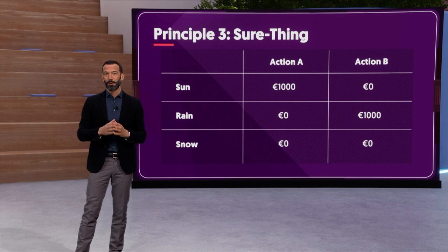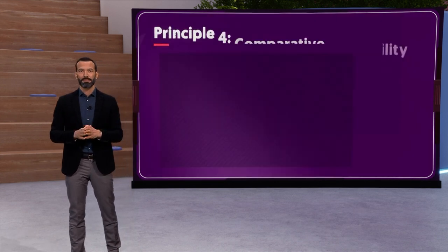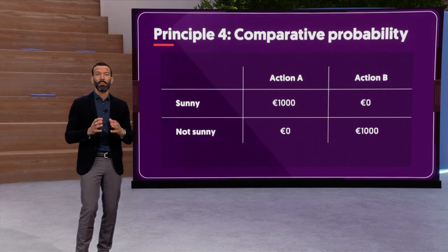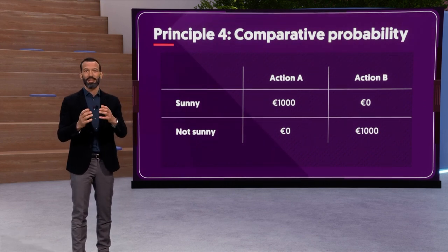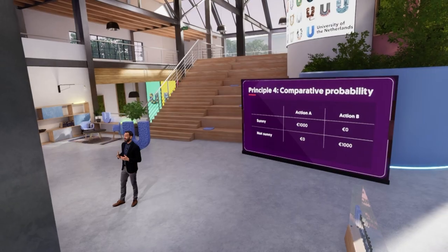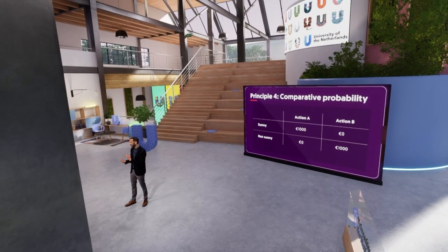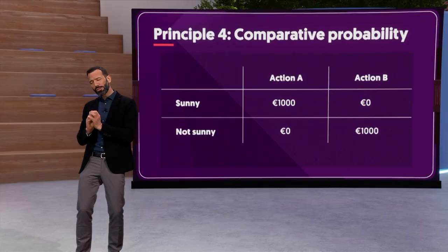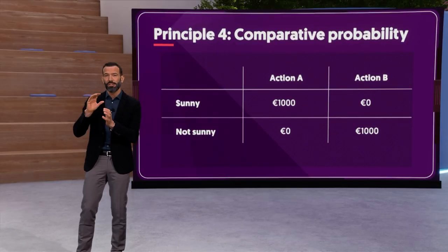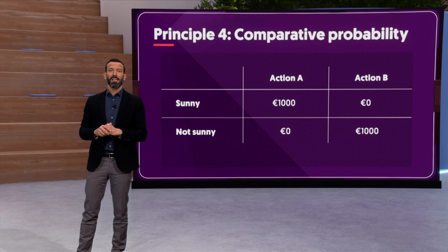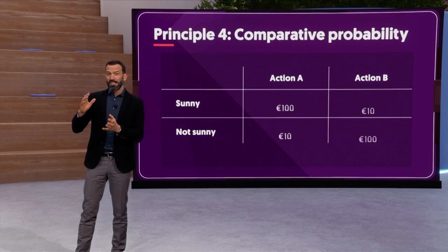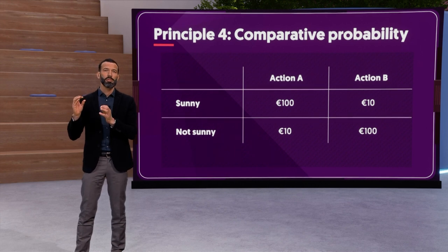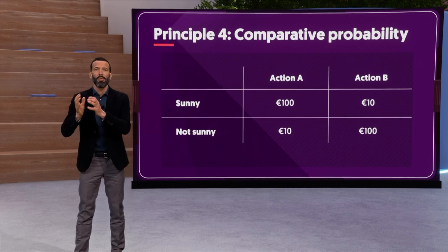The fourth principle is called comparative probability. The decision process should consistently assign more weight to the most likely event. In other words, if you choose A here — meaning that you believe sunny is more likely than not sunny — then you should also choose A if we change the size of the bet. So even though the reward is different, you should still choose the option that rewards you more for the event that is more likely to occur.